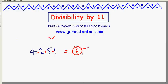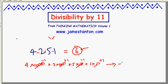However, the remainder upon division by 11, I'm afraid, is not 6. If I was to think of this carefully, this is 4 groups of 1,000, plus 2 groups of 100, plus 5 groups of 10, plus 1 group of 1. This should be negative 1. This should be plus 1. This should be negative 1. This should be plus 1.